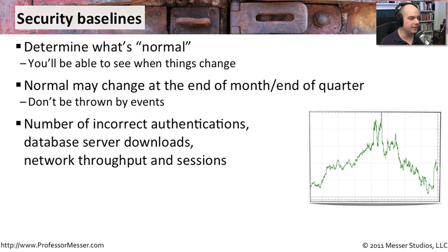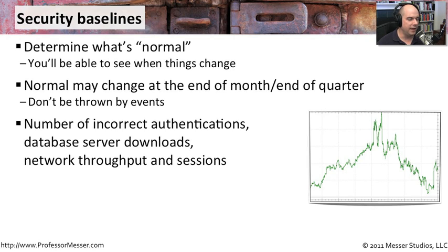You want to look for things like the number of incorrect authentications, the number of downloads from a database server, how much throughput is going through your network, how many sessions are active, and anything else that can give you an idea of the operational impacts of the traffic and systems on your network.